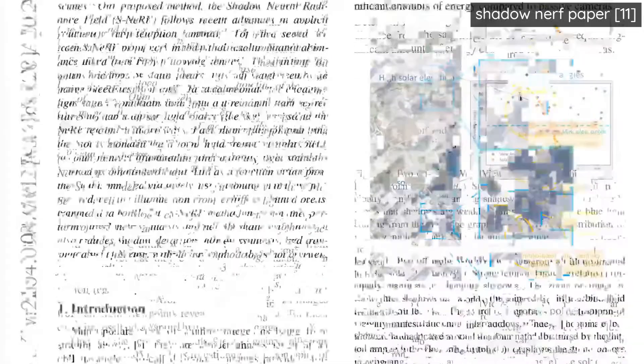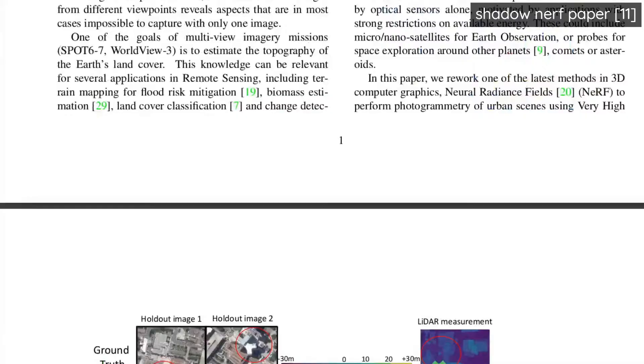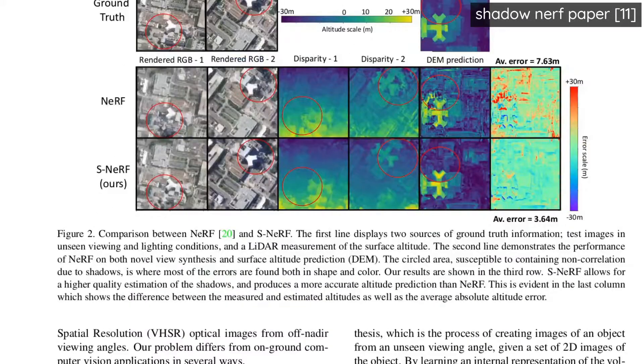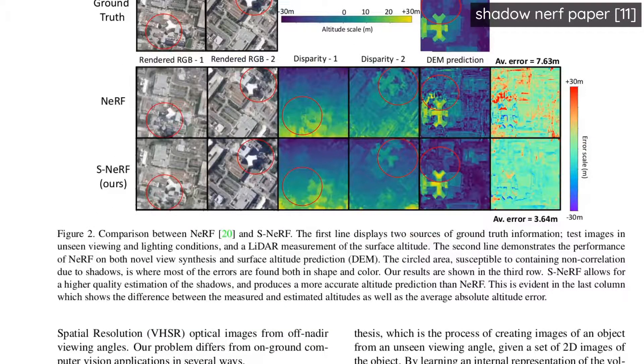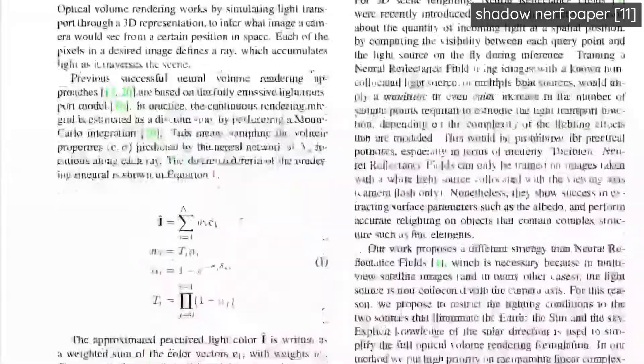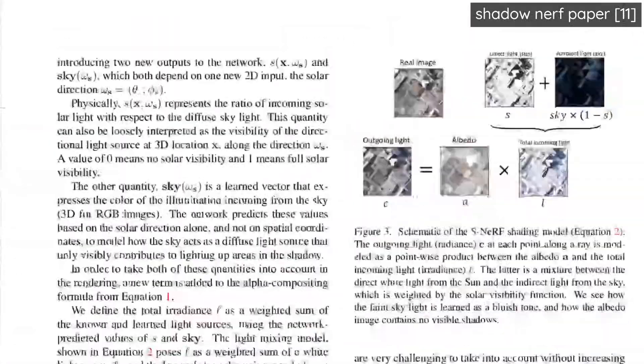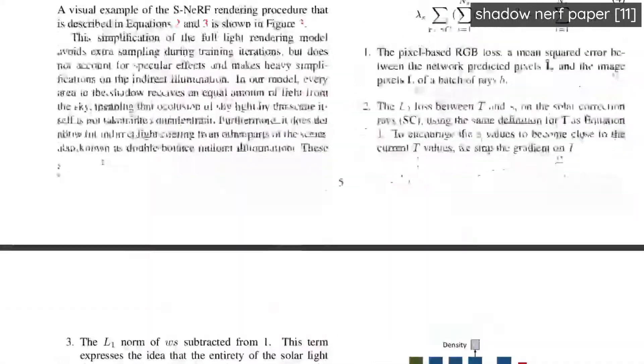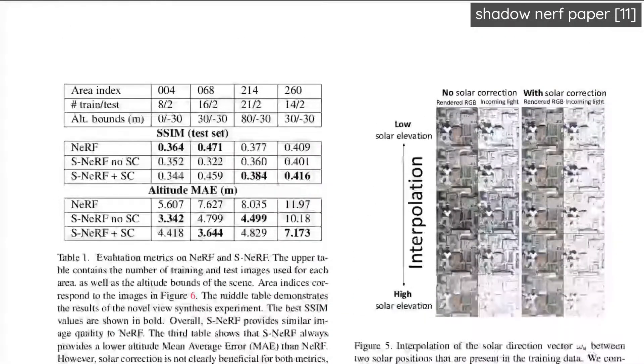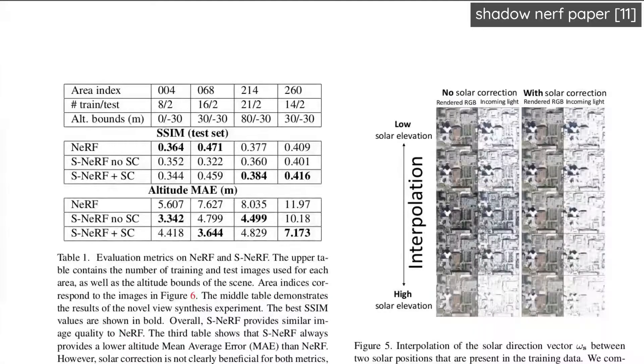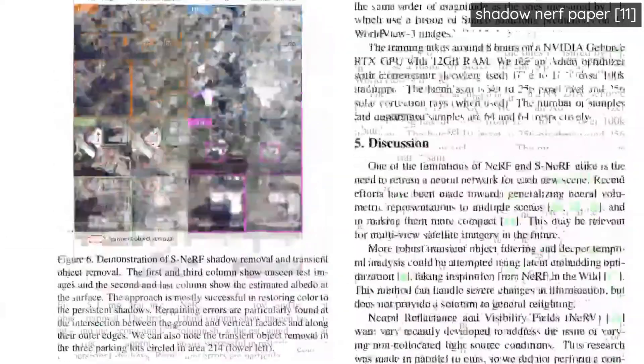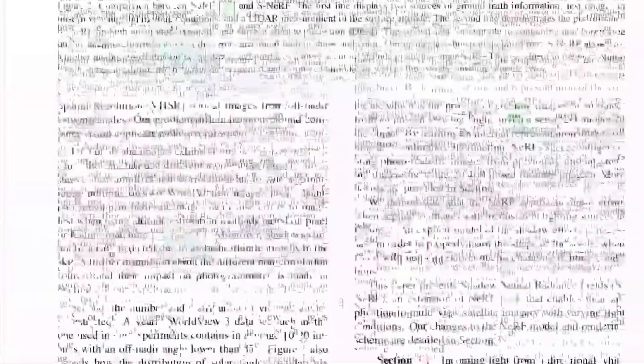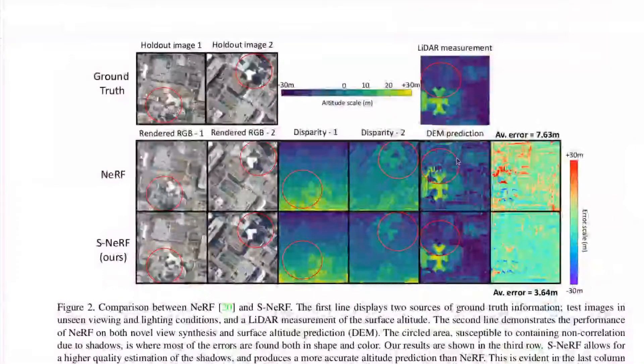Shadow Neural Radiance Field - what is this naming convention? These are shadow-aware multi-view satellite photography from Earth observation. Basically it allows you to create elevation maps and things, which could be really helpful. It's crazy how much information you can get from a satellite image now - really high quality photogrammetry from a satellite. Another piece of really impressive work.